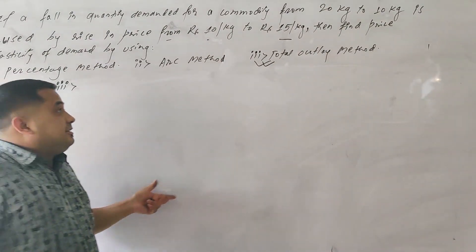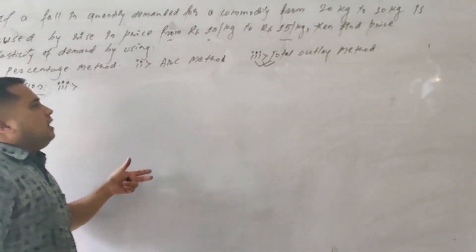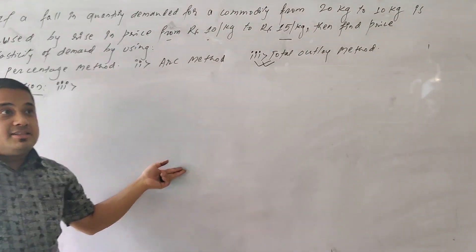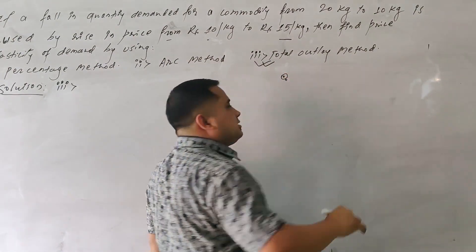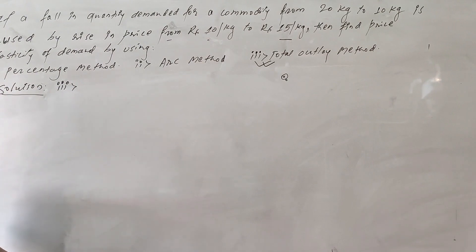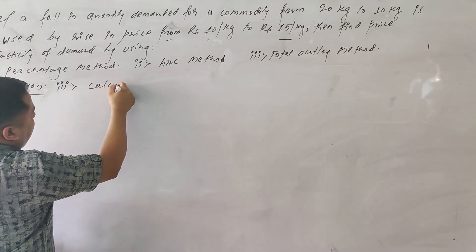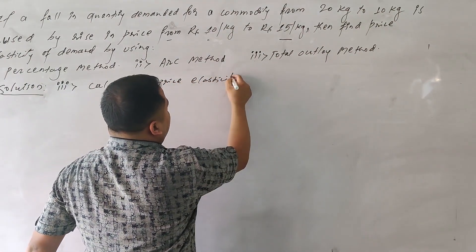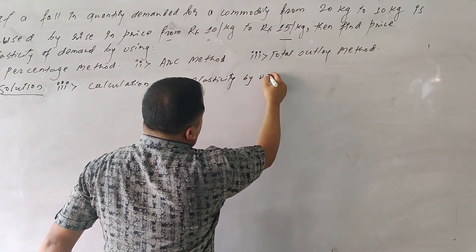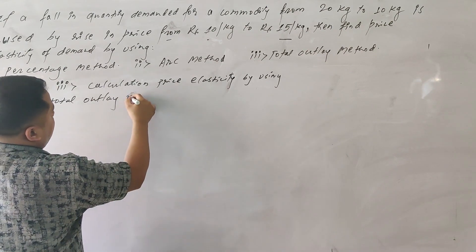The total expenditure method is the process of calculating price elasticity of demand on the basis of change in total expenditure of the consumer on particular goods and services caused by a change in price. This is also called the total outlay method.